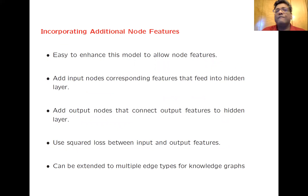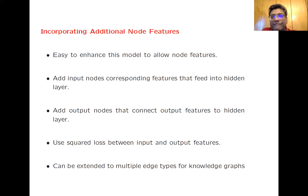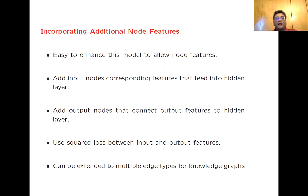You can extend this model further to incorporate additional node features. In some cases, nodes may have features associated with them — for example, in a social network, you may have age, interests, and user profile features. You can add input nodes corresponding to features that feed into the hidden layer, and add output nodes that connect the output features to the hidden layer, using a squared loss between the input and output features. This can also be extended to multiple edge types for knowledge graphs.